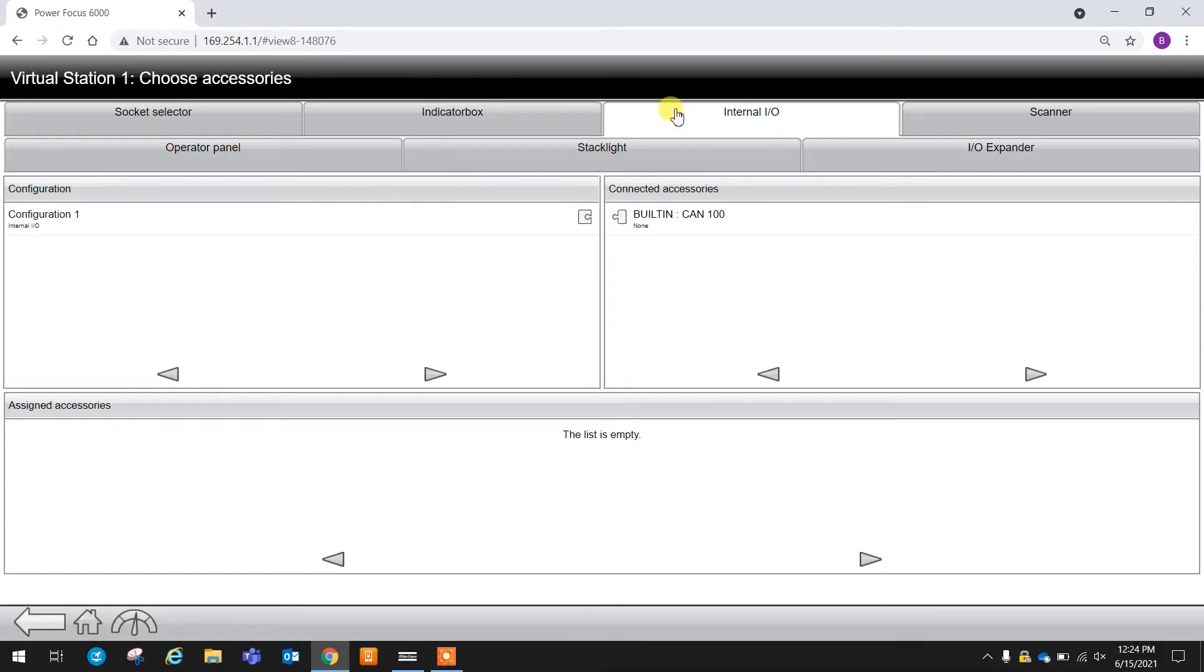What I'm going to do is I'm going to go look for my socket selector, and you can see we have the socket selector connected, and we have a configuration for the socket selector. Now I'm going to double check this configuration for the socket selector real quick.